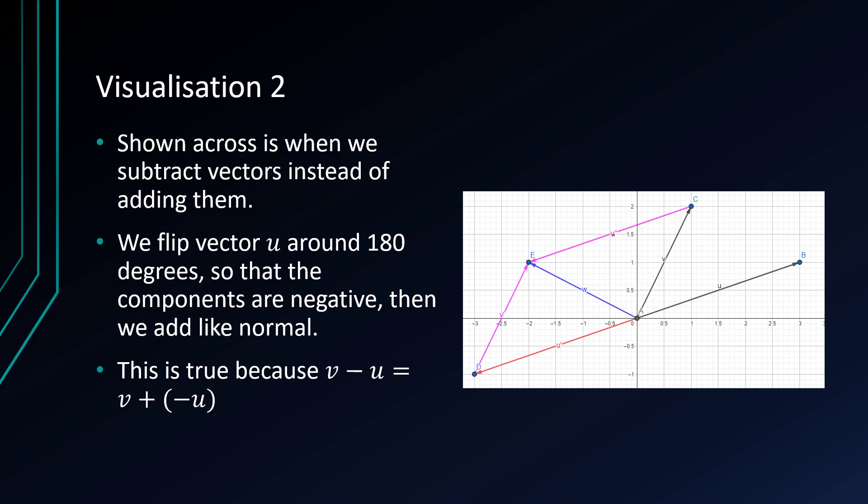So u prime becomes u double prime. So this is actually our new translated vector. And these two pink vectors represent translations of v and u prime. And where they intersect is the vector a minus b. So if we look at this, we can see that u is 3i plus j and v is i plus 2j.